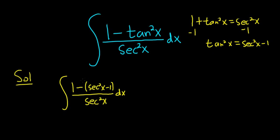So now we can distribute here. There's a negative 1. We can distribute that. So it'll be 1 minus secant squared x and then plus 1 all over secant squared x dx.